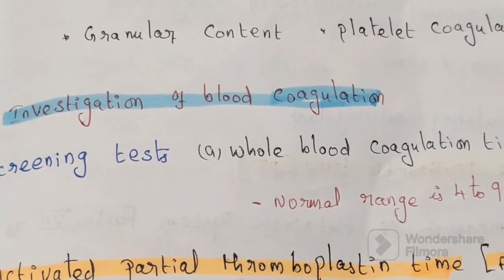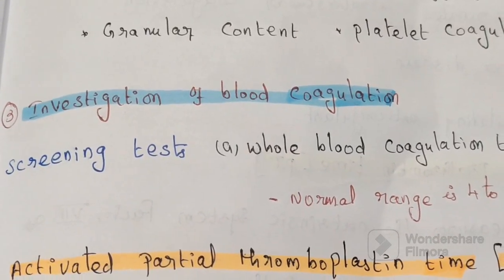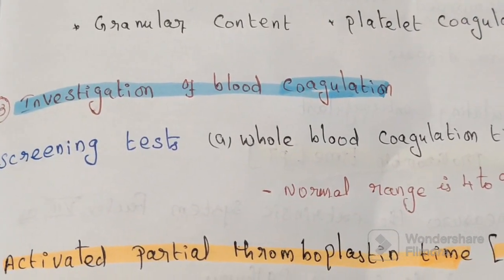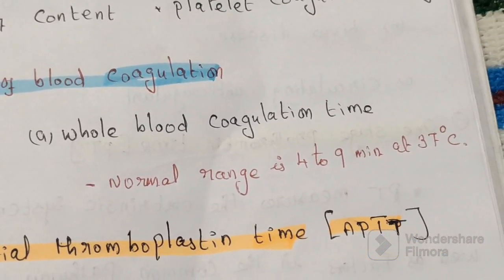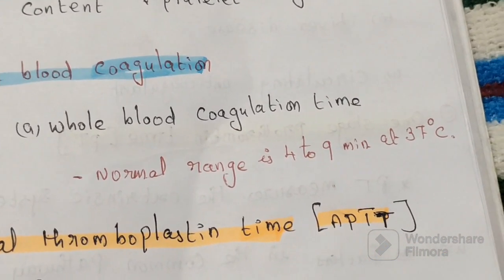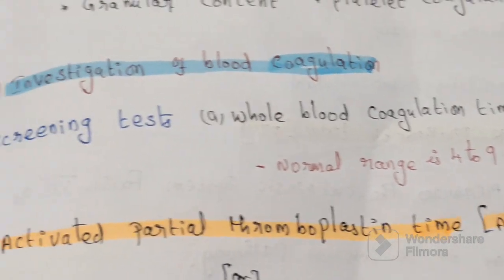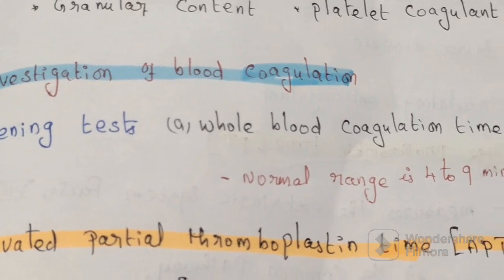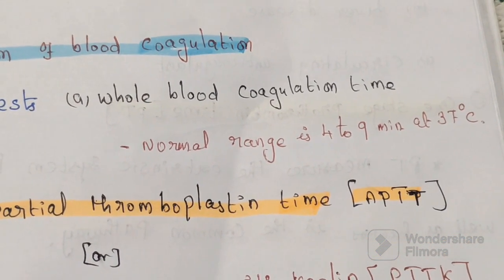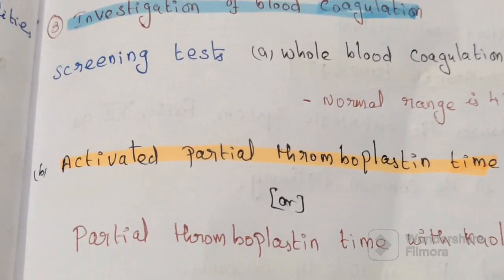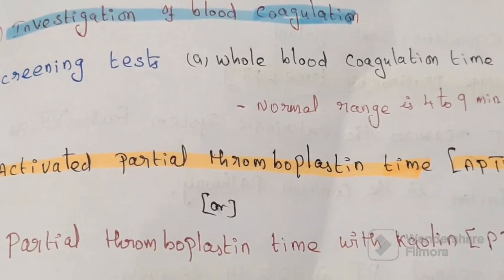The third area is investigation of blood coagulation screening tests. The first is whole blood coagulation time, with a normal range of 4 to 9 minutes at 37 degrees Celsius.